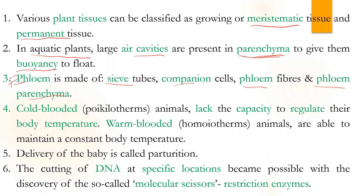Cold-blooded animals, which we also call poikilotherms, lack the capacity to regulate their body temperature — so it is important that the environment is suitable for them. Warm-blooded animals, or homeotherms, are able to maintain a constant body temperature and can modify themselves according to any environmental temperature. Delivery of any baby is known as parturition.